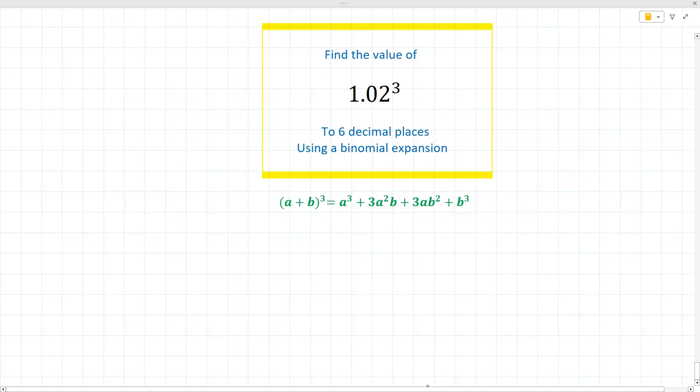So a good place to start for this question is to think about the expansion of a plus b to the power three, since the question says 1.02 to the power three. And the expansion of (a + b)³ is a³ + 3a²b + 3ab² + b³.